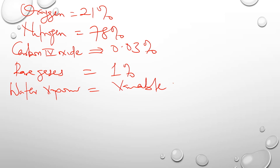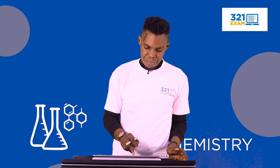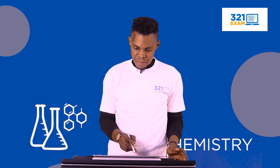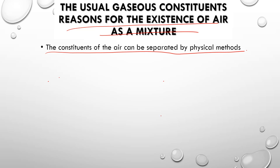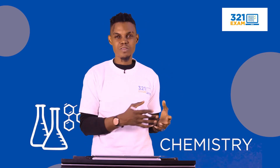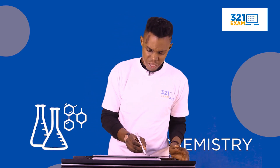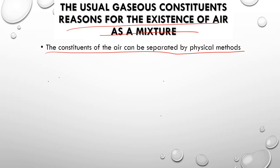Now let's talk about the evidence for the existence of air as a mixture. Number one: the constituents of air can be separated by physical methods. Air is a mixture of gases found everywhere, and when we talked about mixtures, a mixture is a combination of two or more constituents that can be separated by ordinary physical methods.